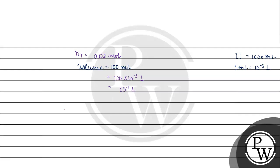Concentration will be equal to the total number of moles divided by volume. So concentration equals 0.02 divided by 0.1, which comes out to be 0.2 molar.